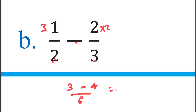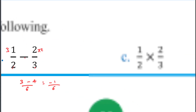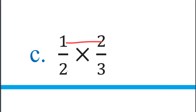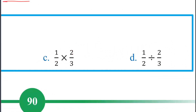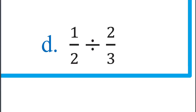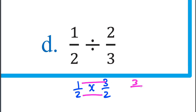3 minus 4, negative 1 over 6, 1 over 3, 1 over 3. Immediately 1 over 2 squared. About 1 over 4.